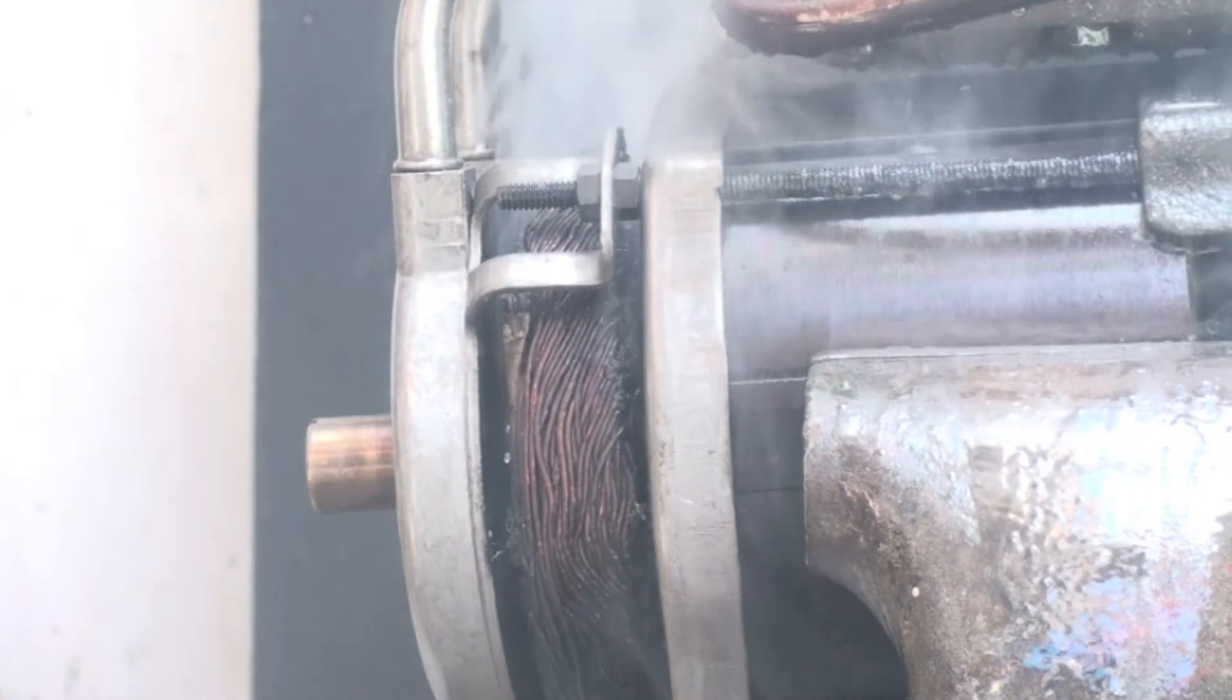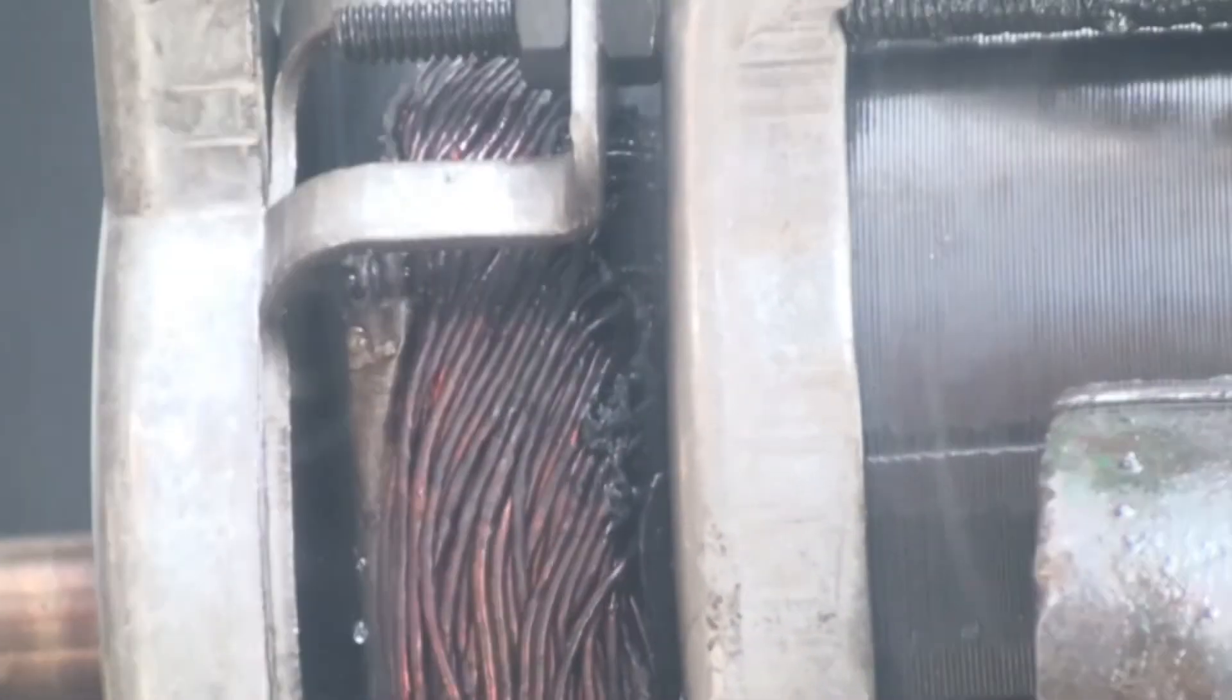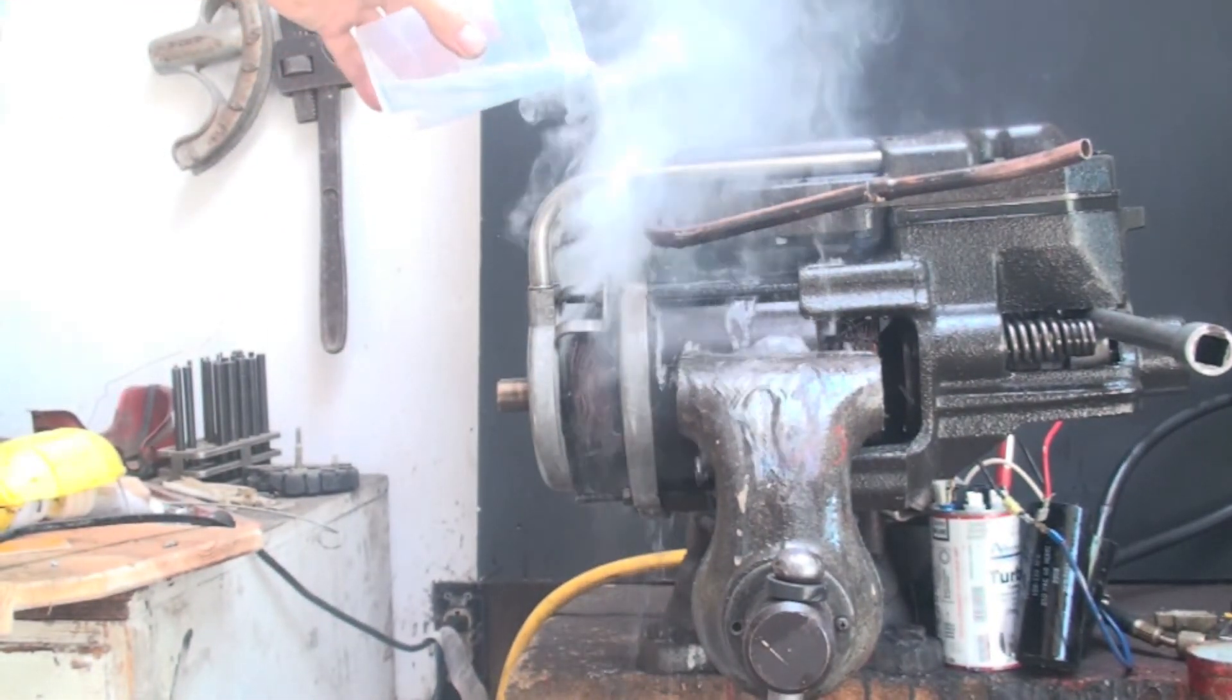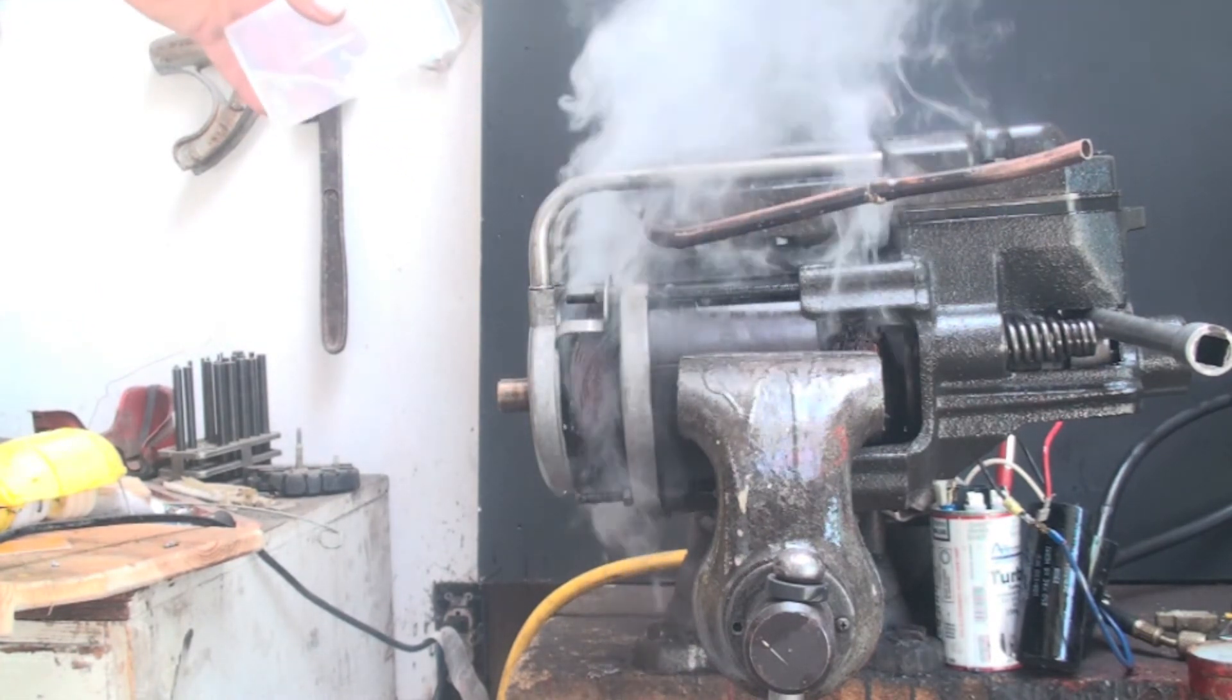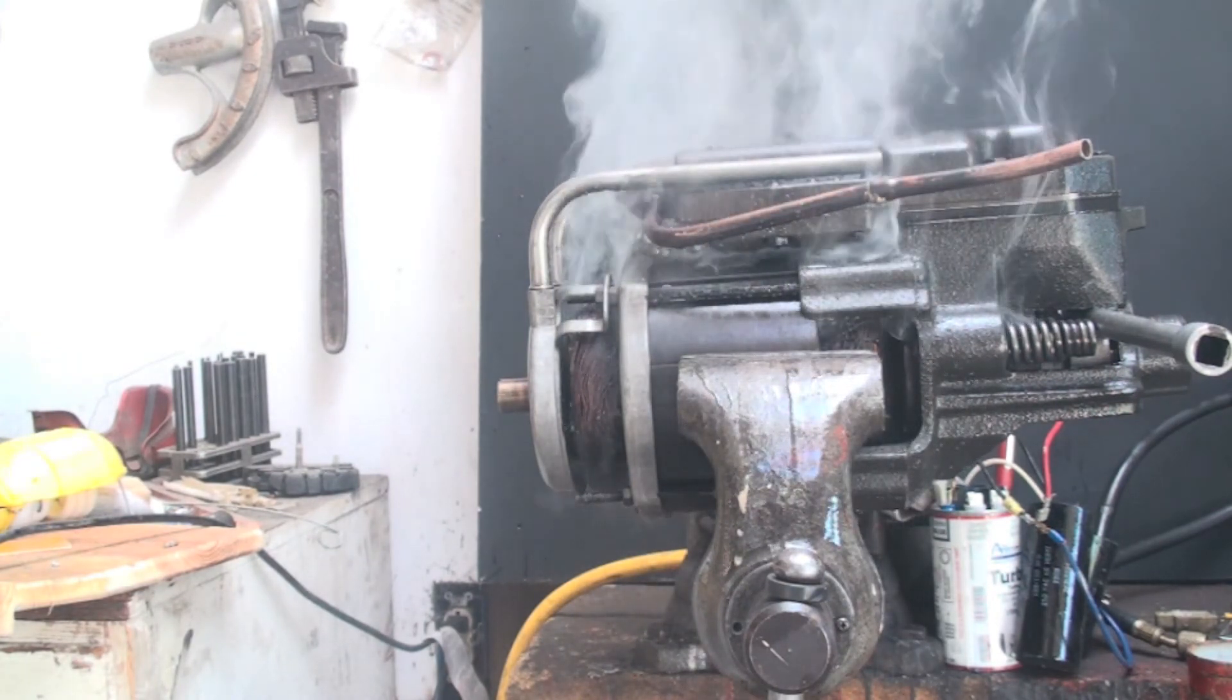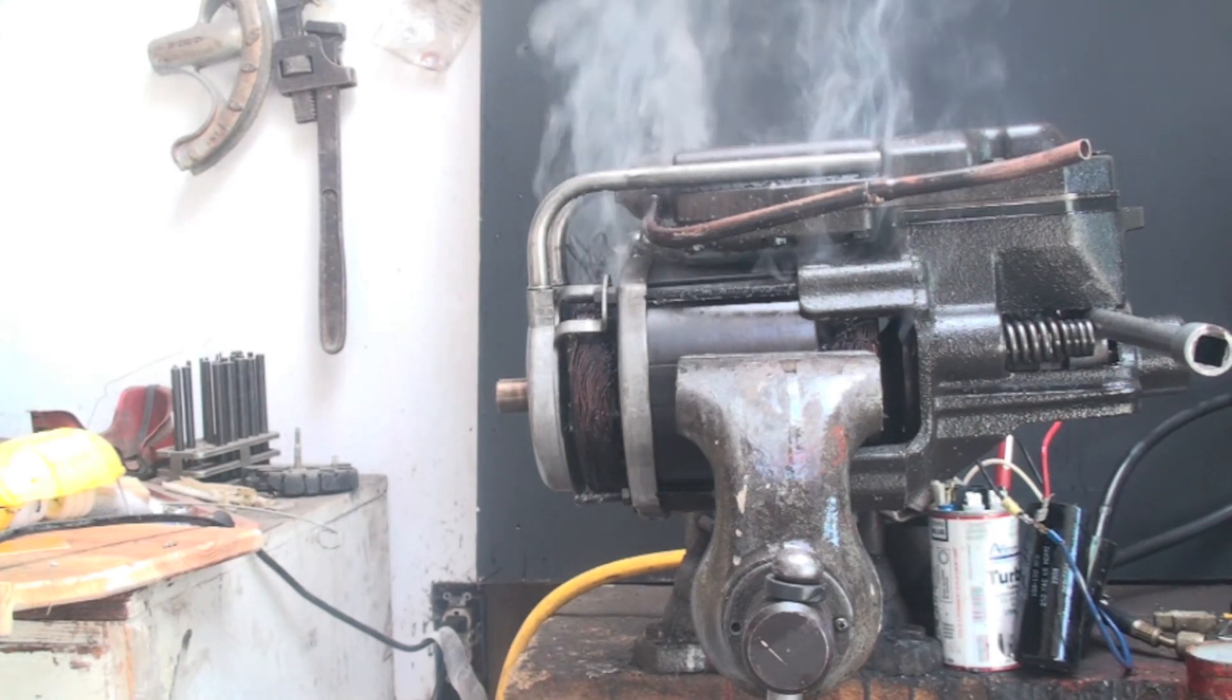This only kicked off the breaker once and took quite a while to kick off that internal overload. I did kind of fool it because I cooled it down too much. But these things should not be run under lock rotor conditions because they will fail, and this is a pretty good example of catastrophic failure.